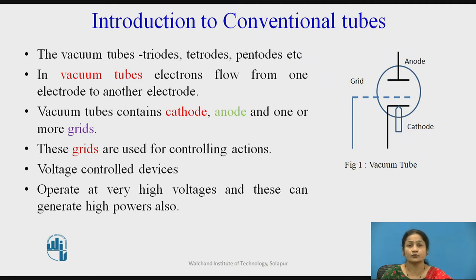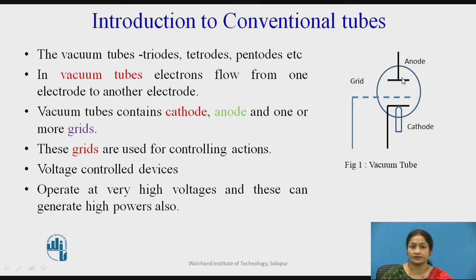This vacuum tube consists of a gas or some liquid in them, so we call it a vacuum tube. This vacuum tube consists of electrons which are flowing from cathode to anode. There is an electron heating gun at the cathode; electrons are emitted from the cathode and move towards the anode. The cathode is at negative potential and the anode is at positive potential. In some cases, the anode is also called a plate.